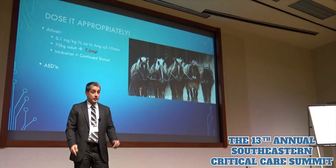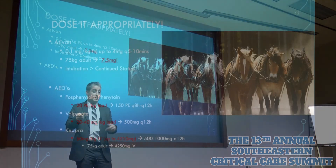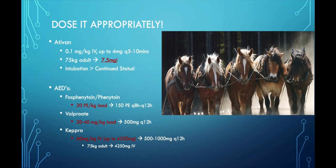Your AEDs are your real workhorses — these are the things that are actually going to make a big difference. If you're confident enough to give fosphenytoin or valproate, I'm confident you're going to give the correct dose. Keppra is where people run into a lot of issues, because the most recent data on Keppra suggests that in order to treat status epilepticus, you should be giving 60 milligrams per kilogram, up to 4.25 grams. That means a 75 kilogram adult should get the max dose every single time.